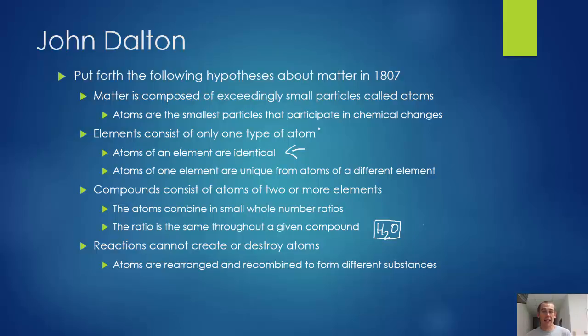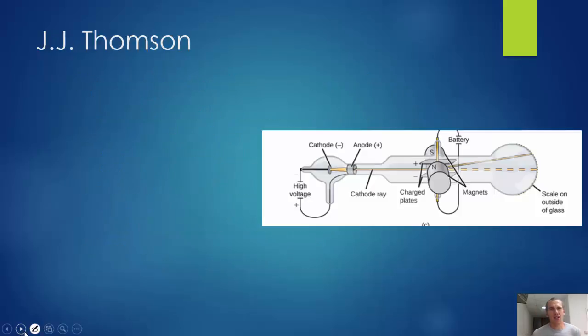First, we actually have to figure out that atoms are not the smallest particles that there are. So this didn't happen until the late 1800s, early 1900s. And a guy named J.J. Thomson was experimenting with a cathode ray tube. Now this is a picture of a cathode ray tube, a cartoon of one.